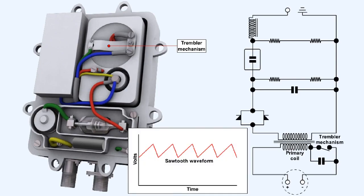The trembler mechanism works on the same principle as that of an electric bell. By doing so, it causes the primary coil input to become a sawtooth waveform.